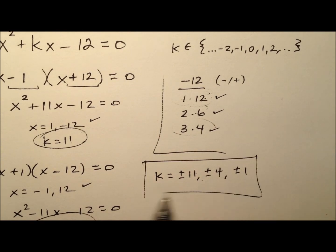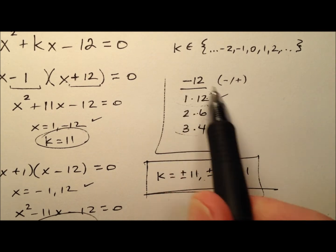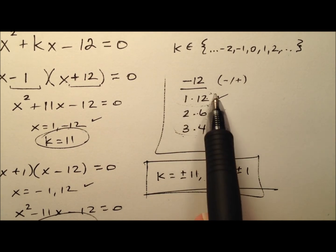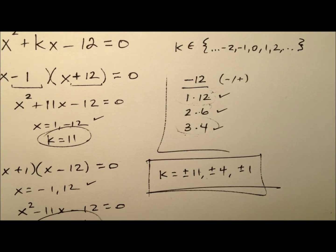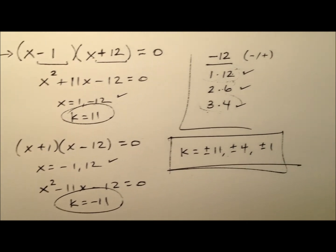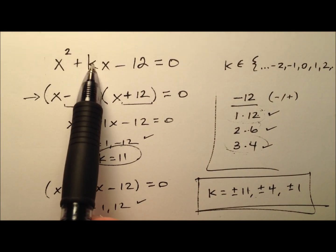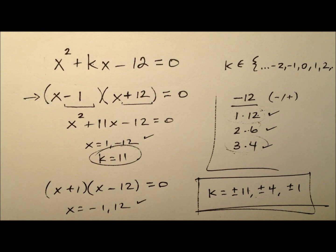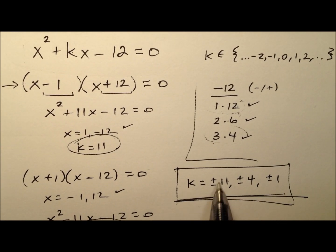These are all the possible values of k because these factor pairs are all the possible factor pairs for 12 using whole numbers that result in integer solutions. So the values of k that give integer solutions are: k = ±11, ±4, and ±1.